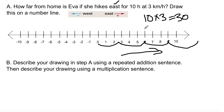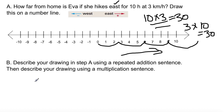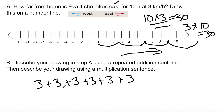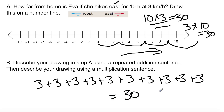Describe your drawing using a repeated addition sentence, then using a multiplication sentence. We already did the multiplication sentence: 10 times 3, or 3 times 10 — either one works. For repeated addition, it's 3 plus 3 plus 3... for each of the 10 hours, giving you 3 times ten additions equaling 30. So she went 30 kilometers.